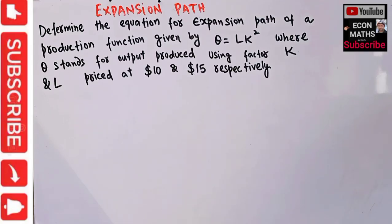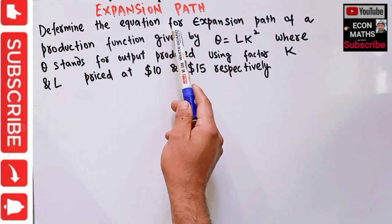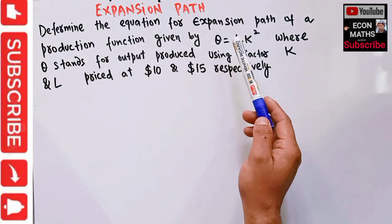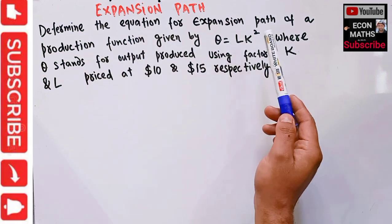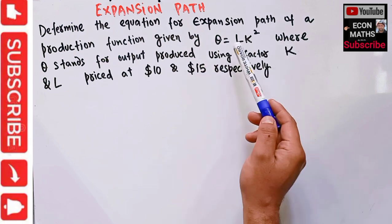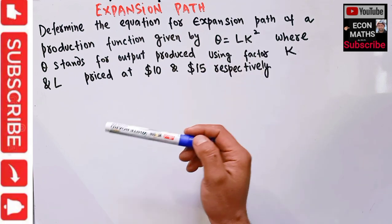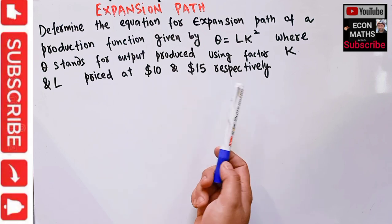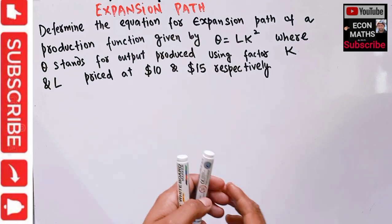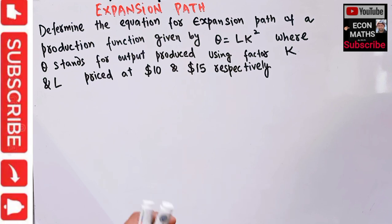In this video, we will learn how to derive the expansion path of a production function given the prices of the inputs. The question is: determine the equation for the expansion path of a production function given by Q = L·K², where Q denotes output produced using factors labor and capital, and the price of labor and capital are given as 10 and 15 respectively.